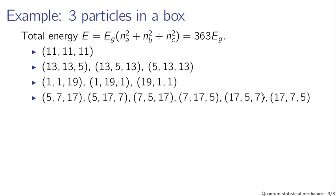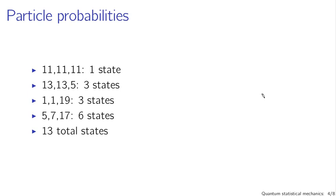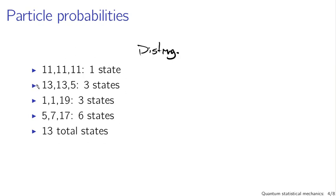For bosons, all of these states are equally likely. I have one state with (11, 11, 11), three states with (13, 5, 13) distinguished by order, three states with (1, 1, 19), and six states with (5, 7, 17) distinct by order. If the particles are distinguishable, these states are all distinguishable — (5, 7, 16) is distinct from (7, 5, 17), for instance. With the fundamental assumption that all states with the same energy are equally likely, I can calculate some probabilities.